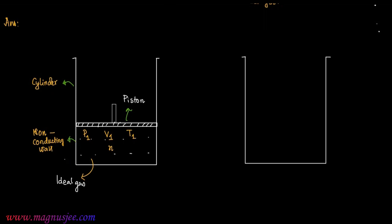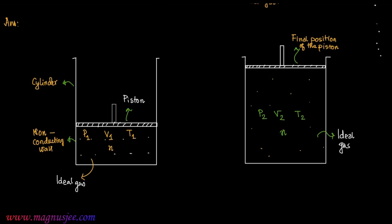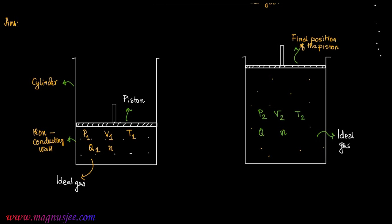Here n is the number of moles and a piston is fitted. Due to adiabatic expansion, the piston moves to its final position. The walls of the cylinder are non-conducting so there will be no exchange of heat energy. P2, V2, T2 are the final pressure, volume, and absolute temperature of the ideal gas.